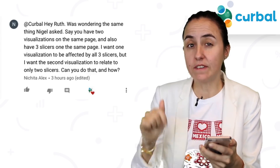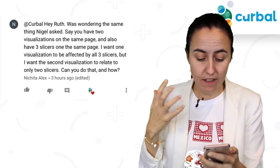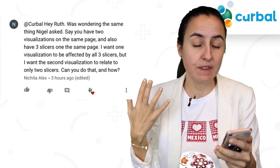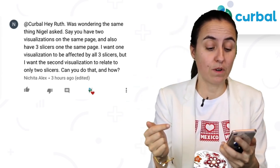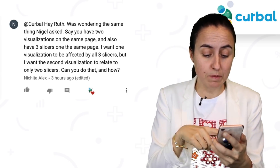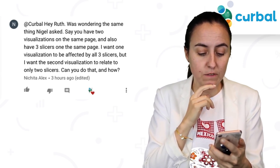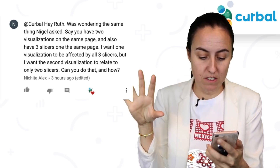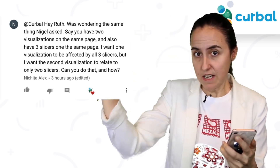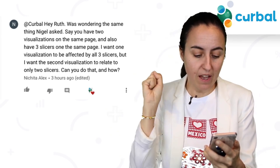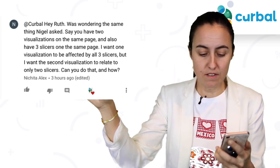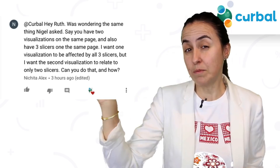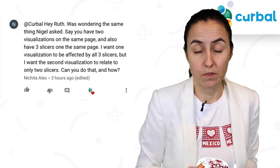The next one is a question I got here on the YouTube channel. It says: 'Hey Ruth, I was wondering the same thing as Nigel.' Someone else had asked that. He explains: say you have two visualizations on the same page and you have three slicers. I want one visualization to be affected by all three slicers, but the other one to be affected by only two. Is that possible?